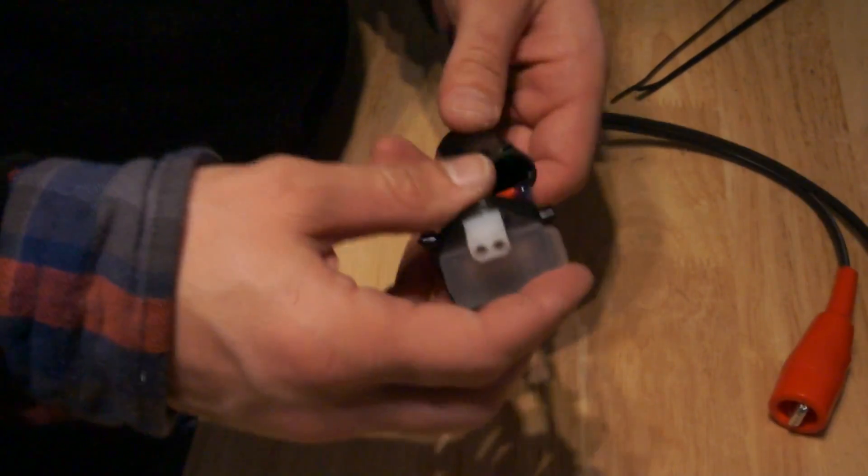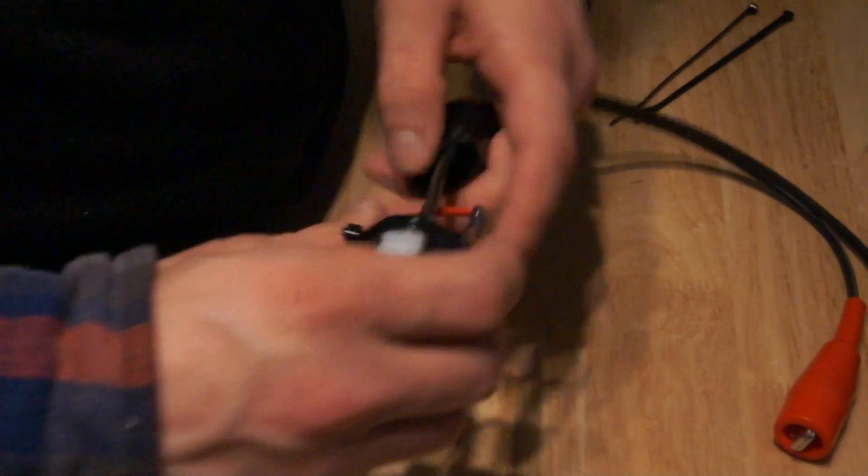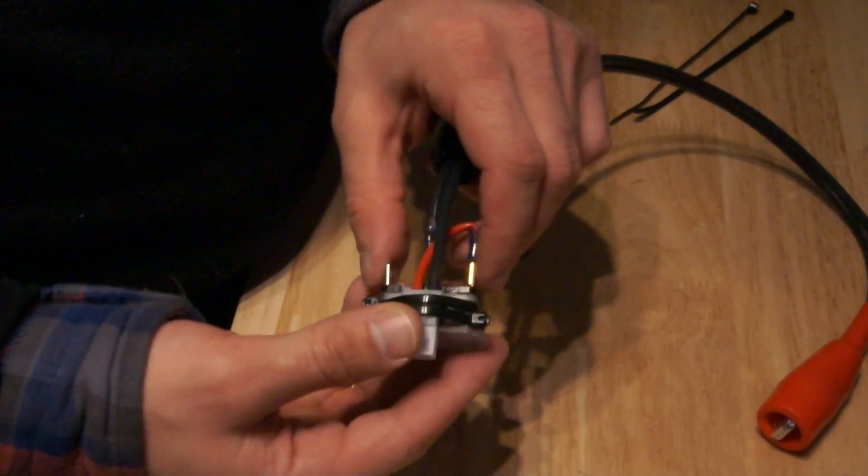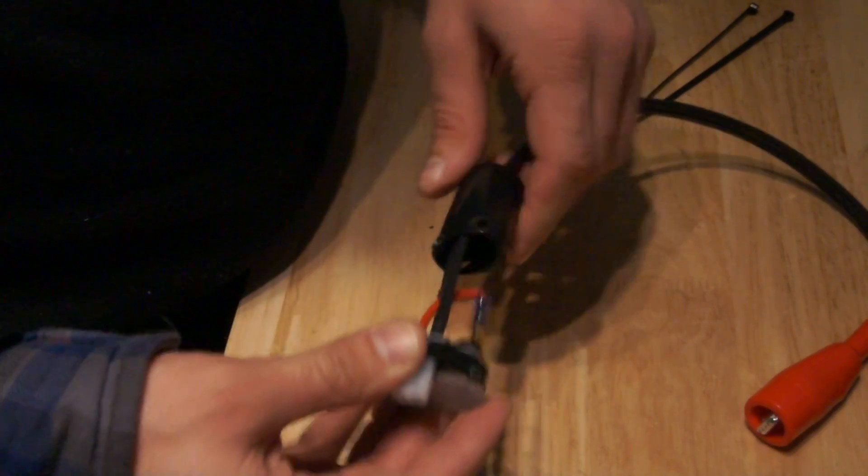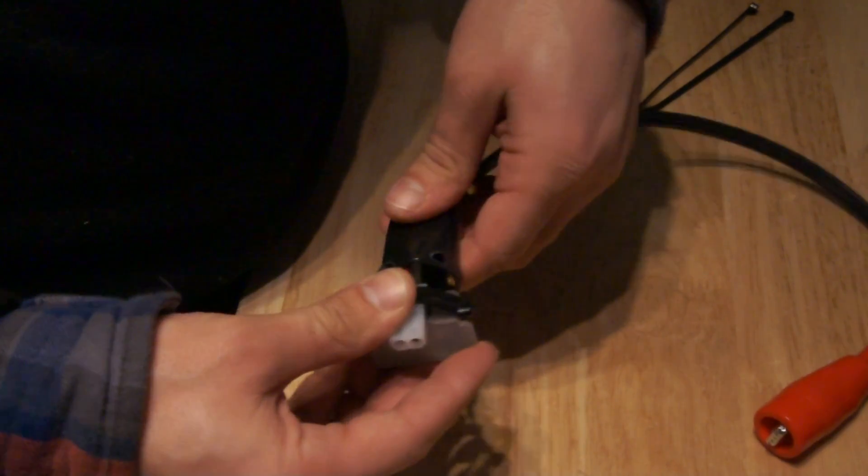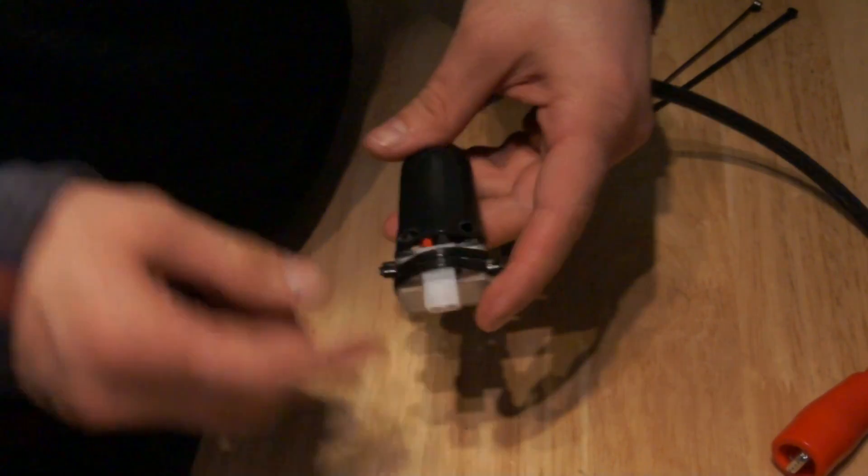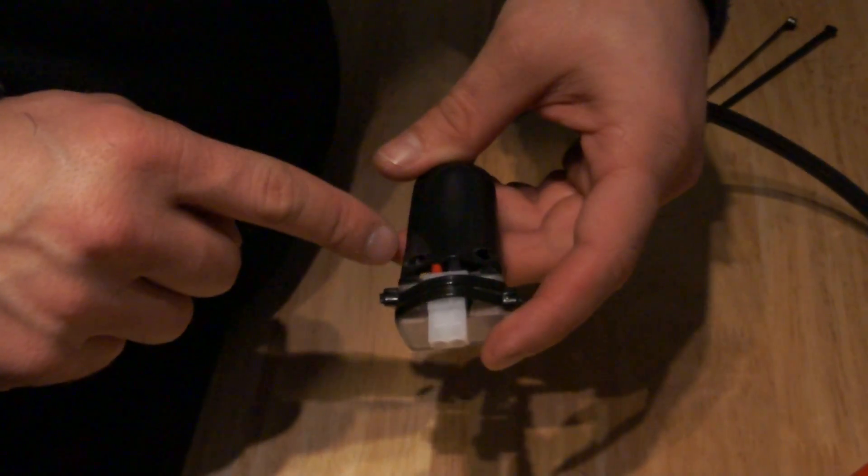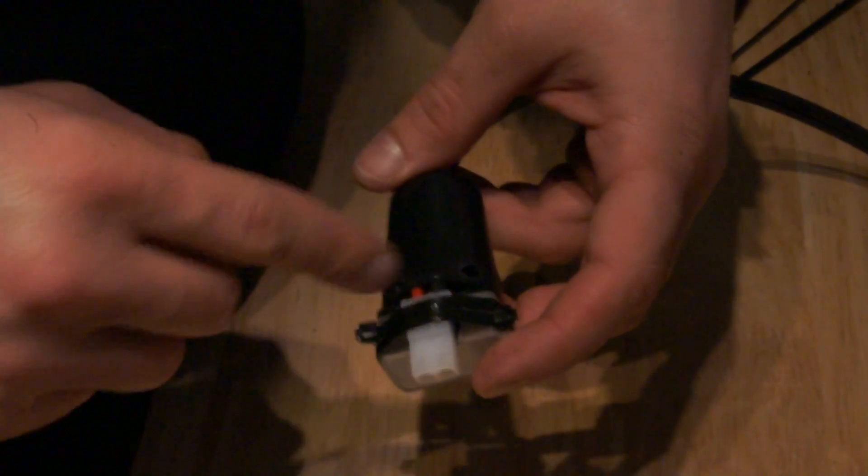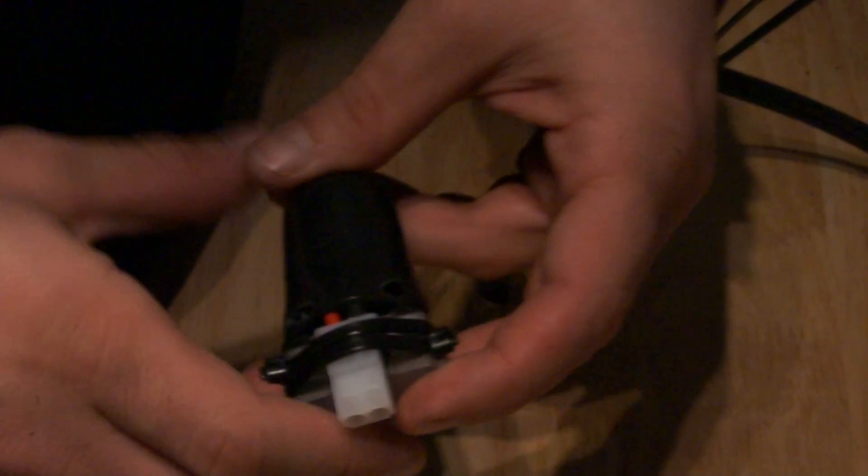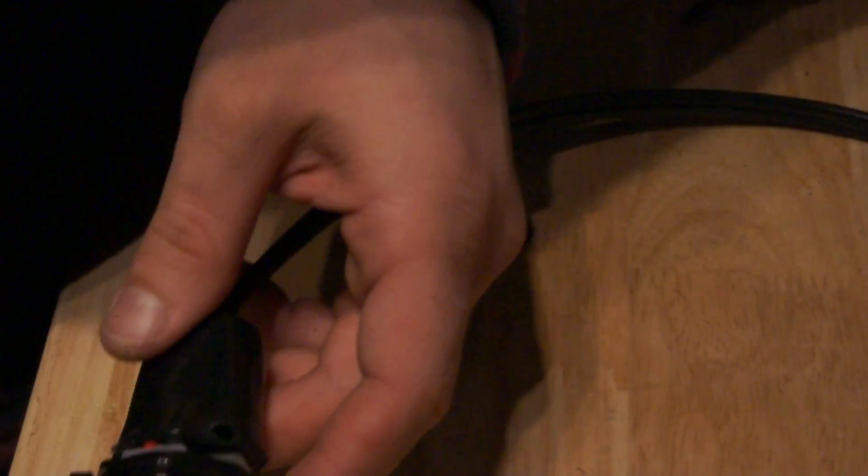And then we can push our black cap up over the terminals. You may need to bend in the terminals just a little bit to get this over everything. And we want to kind of line up the holes on either side so that we can get the zip ties through.